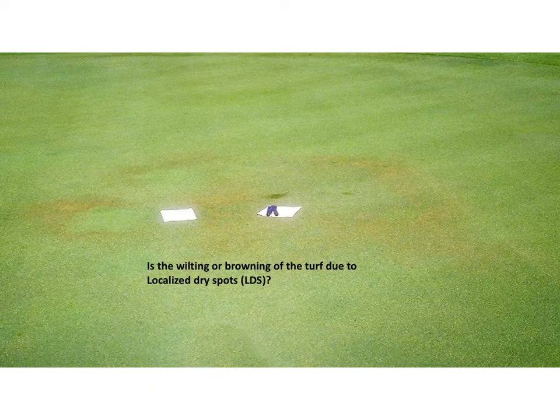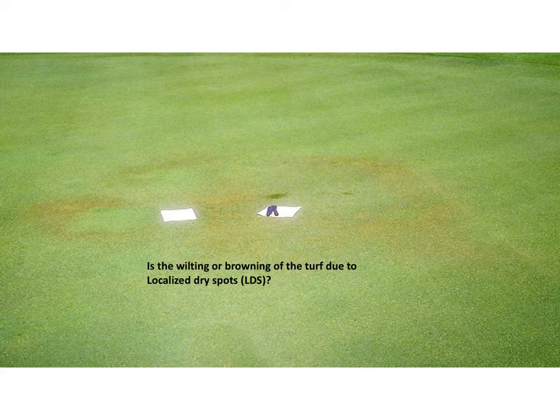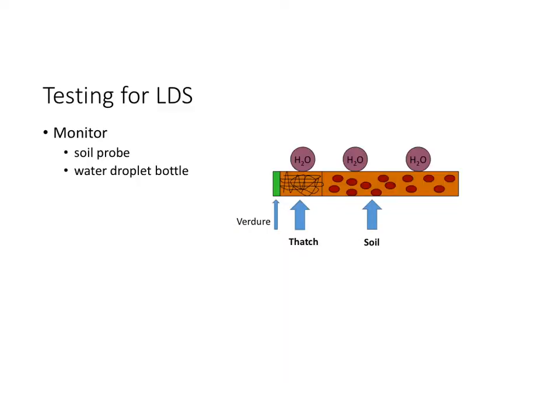To determine whether the cause of moisture stress symptoms is due to localized dry spots, we can do a quick test. The test is relatively simple and can be done in the field. The tools you need are a soil probe or a device that can take a core sample from the root zone, and a water bottle where a droplet can be applied.